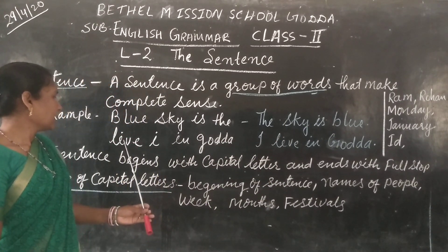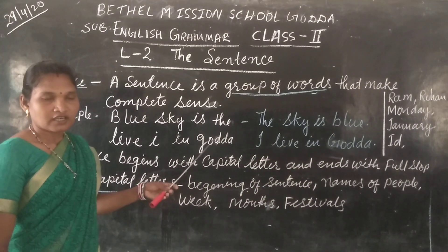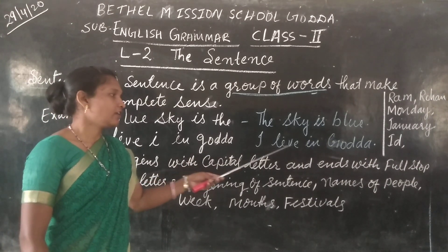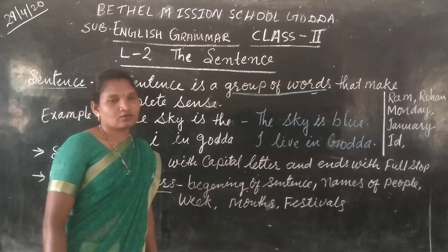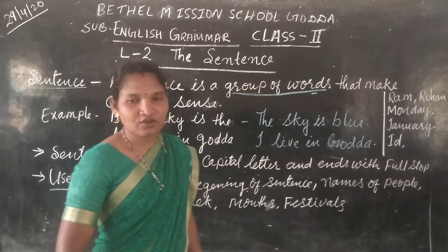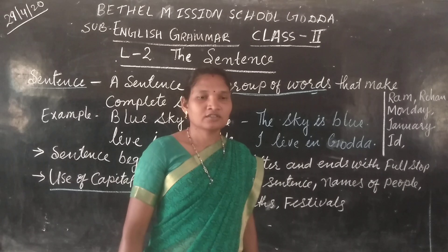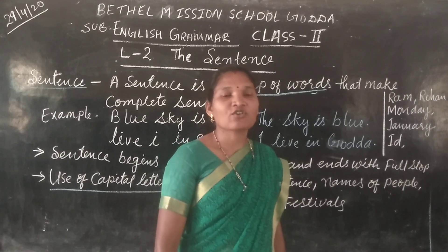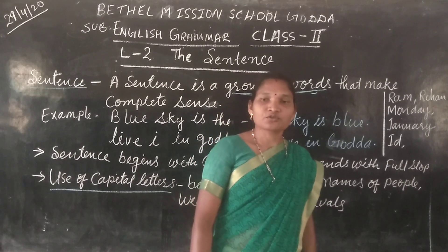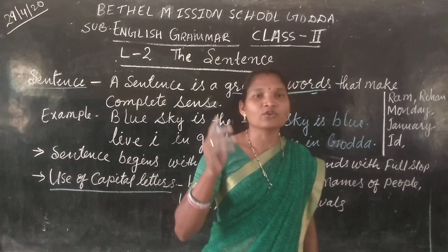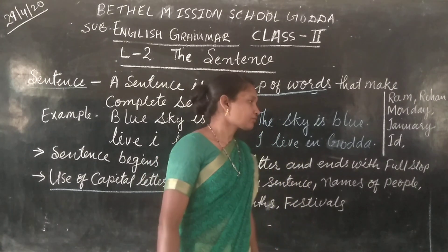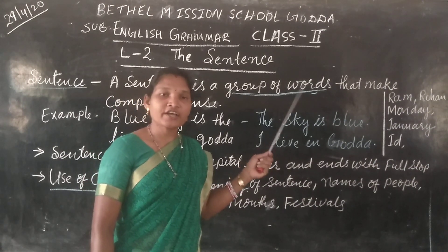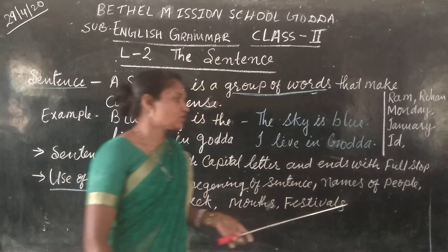So now the next example: Live I in Gorda. Are they all correct? No. So in the correct way we have to write: I live in Gorda. So sometimes you all speak among yourselves — come, they'll go. All these are words but they are not in correct order. So to speak correctly: Come, we will go there. This is the correct sentence. So to form the sentence we have to arrange the words.